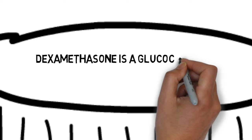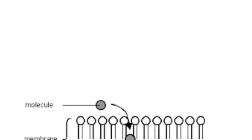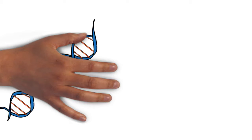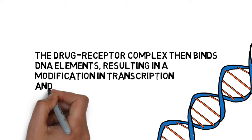Dexamethasone is a glucocorticoid receptor agonist that activates the receptor it binds to. Unbound dexamethasone crosses cell membranes and binds with high affinity to specific cytoplasmic glucocorticoid receptors. The drug-receptor complex then binds DNA elements, resulting in modification of transcription and translation.